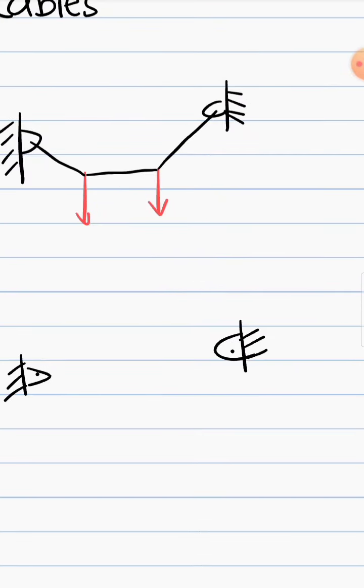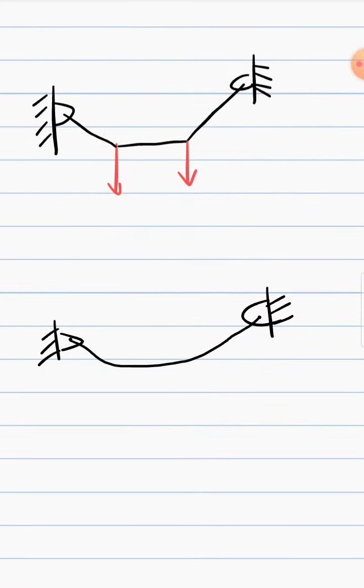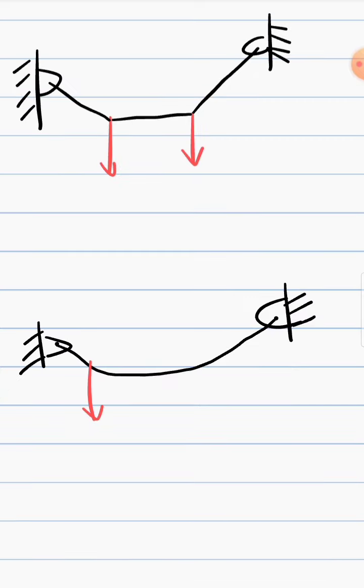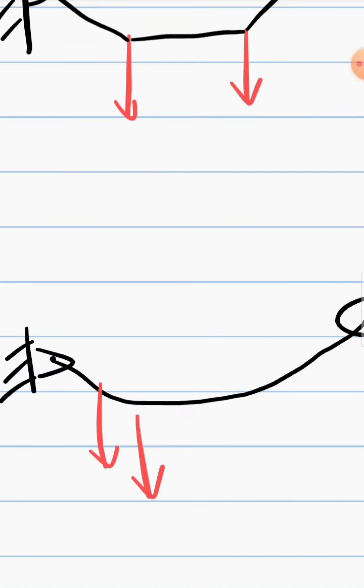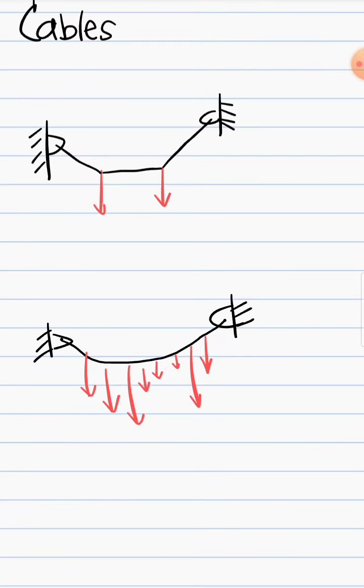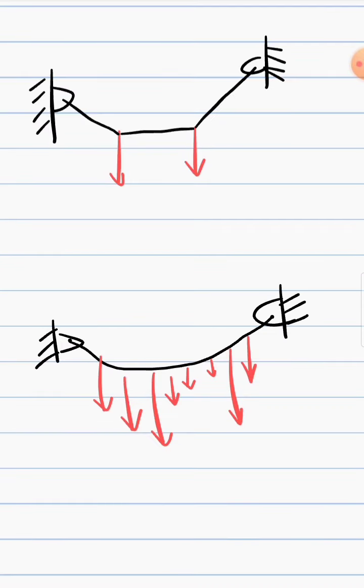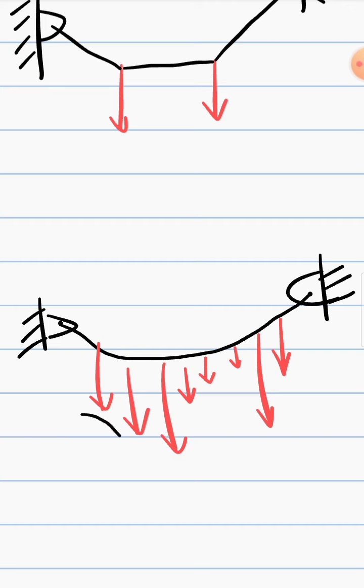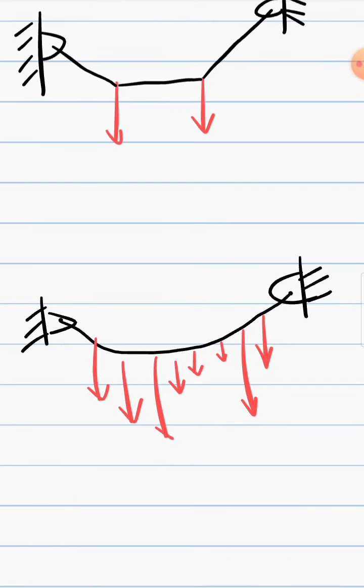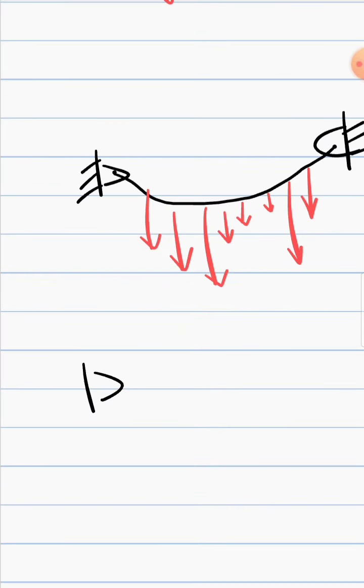The second is cable that carries distributed load. So from single or concentrated force, now it carries distributed but not uniform - not uniform distributed load. This simply means that as we go from left to right, the loads vary. The loads vary as you can see here - it goes up and then down, up and then it becomes stronger and lesser and lesser. So it varies but not uniform.